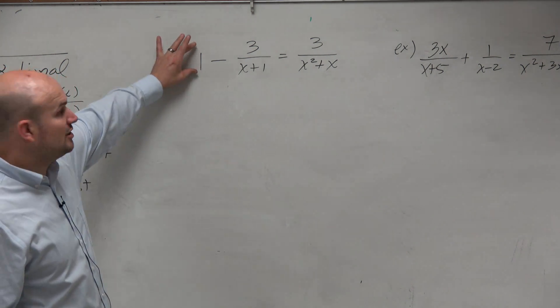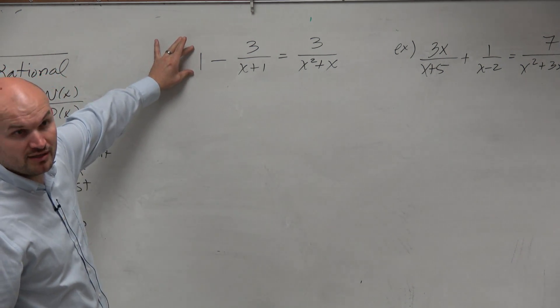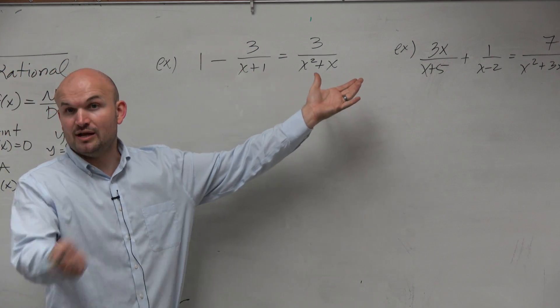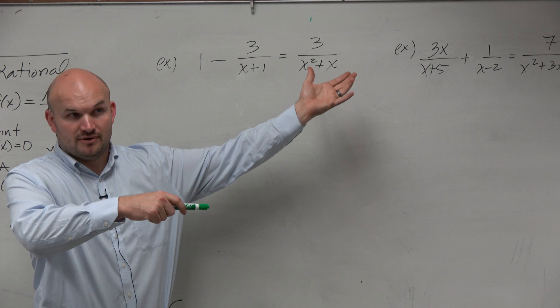You could multiply this by x plus 1 over x plus 1. Then they'd have common denominators and you could combine them. Then you have a proportion and it was like the last example I did. You could do it that way.